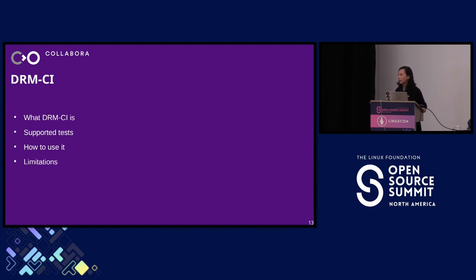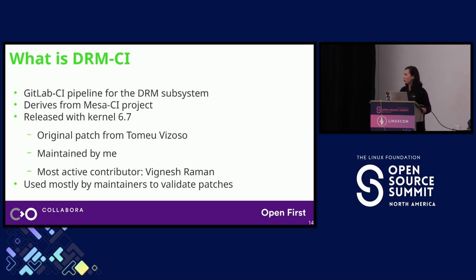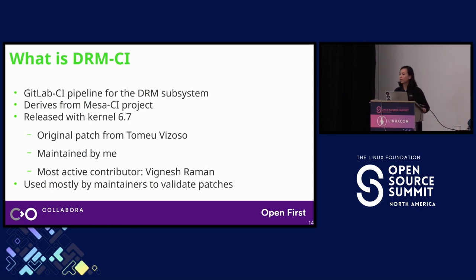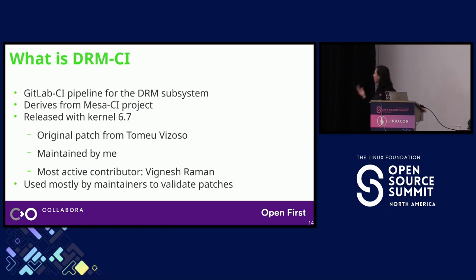DRM CI is a GitLab CI pipeline for the DRM subsystem, or for the graphics stack. It is derivative work from the Mesa CI project, where they have this pre-merge model implemented and working for some time. If you're interested in understanding more about the Mesa project, you can see the talk from David Heidelberg about GPU testing. DRM CI was released with kernel 6.7. The original patch was from Tomei Fissoso, and right now I'm maintaining it, with the most active contributor being a colleague called Wignesh Roman. DRM CI is mostly used by maintainers to validate patches.